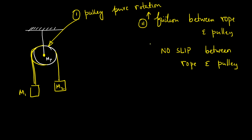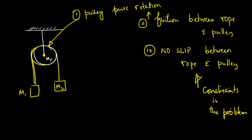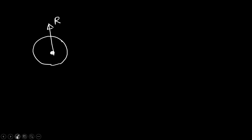All these aspects are new, and this is going to become important because we will use it as one of the constraints in the problem. In all previous problems we assumed no friction and therefore the pulley did not rotate. Now let us draw the free body diagram. The pulley is acted upon by a reaction force from the support, but that force passes through the pivot point and therefore has no torque about it.